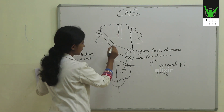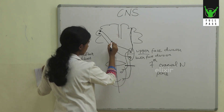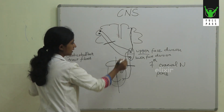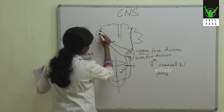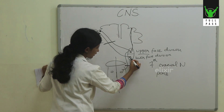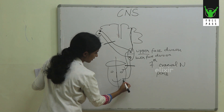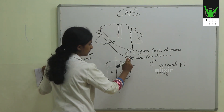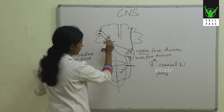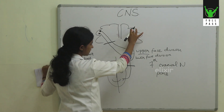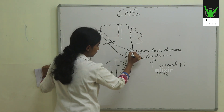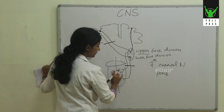But when it comes to an upper motor neuron lesion, if the lesion is on the opposite side, both those fibers are lost, and the upper motor neuron to the lower face division is gone. So the lower side of the face on the opposite part will be affected. But when we look at the upper face division, even though the upper motor neuron from the opposite cerebral hemisphere is gone, there is still supply from the same side of the cerebral hemisphere. Therefore, the upper part of the face will be spared and will not show any problems.